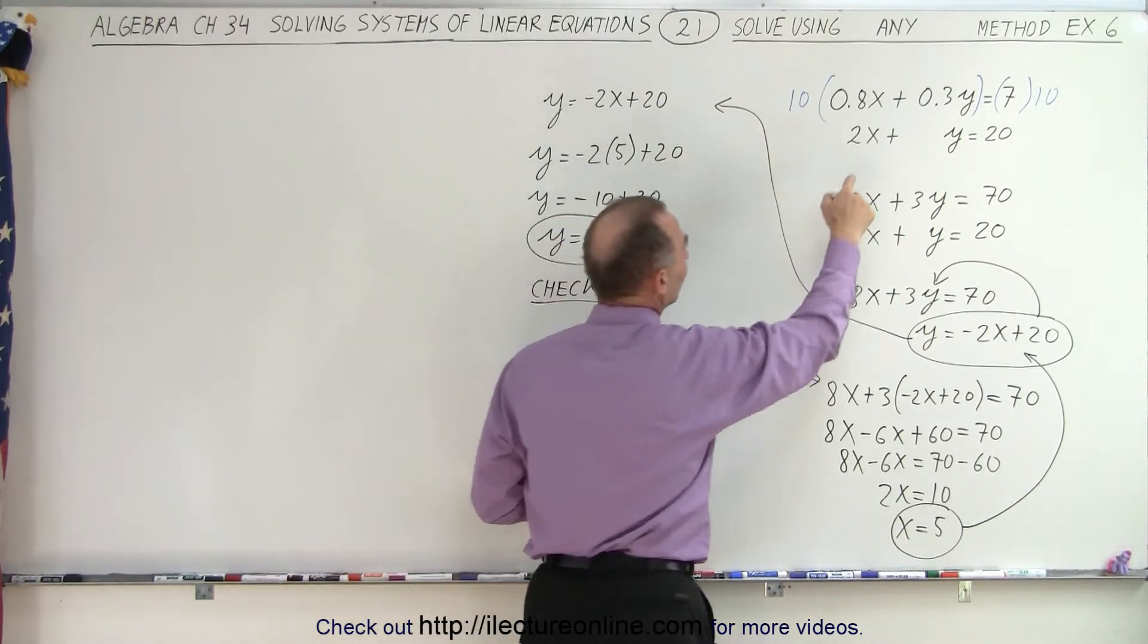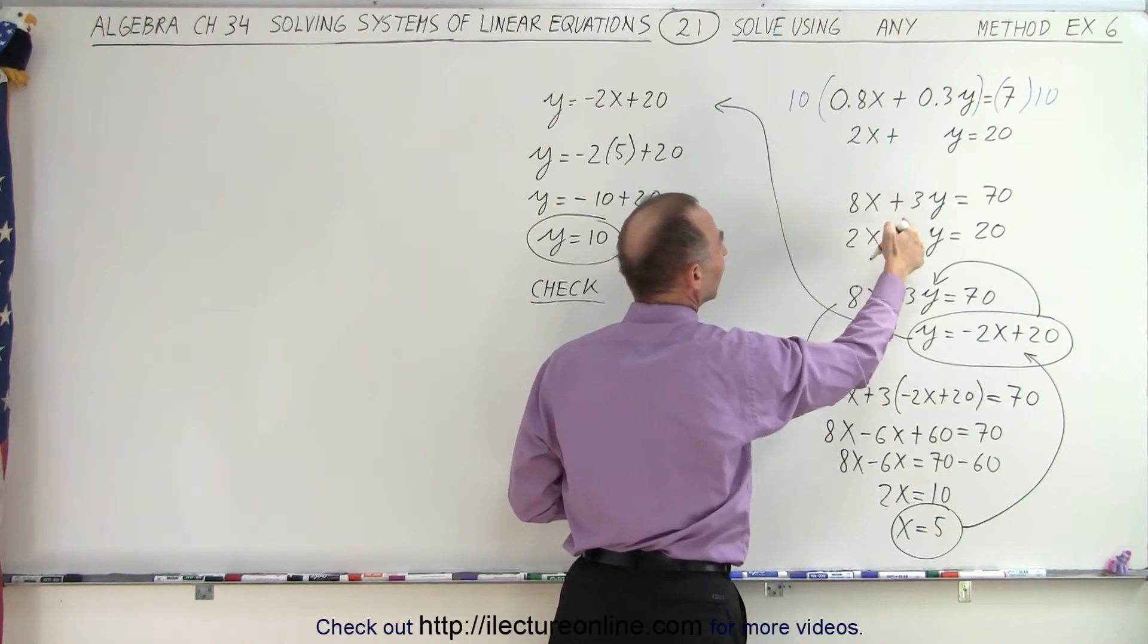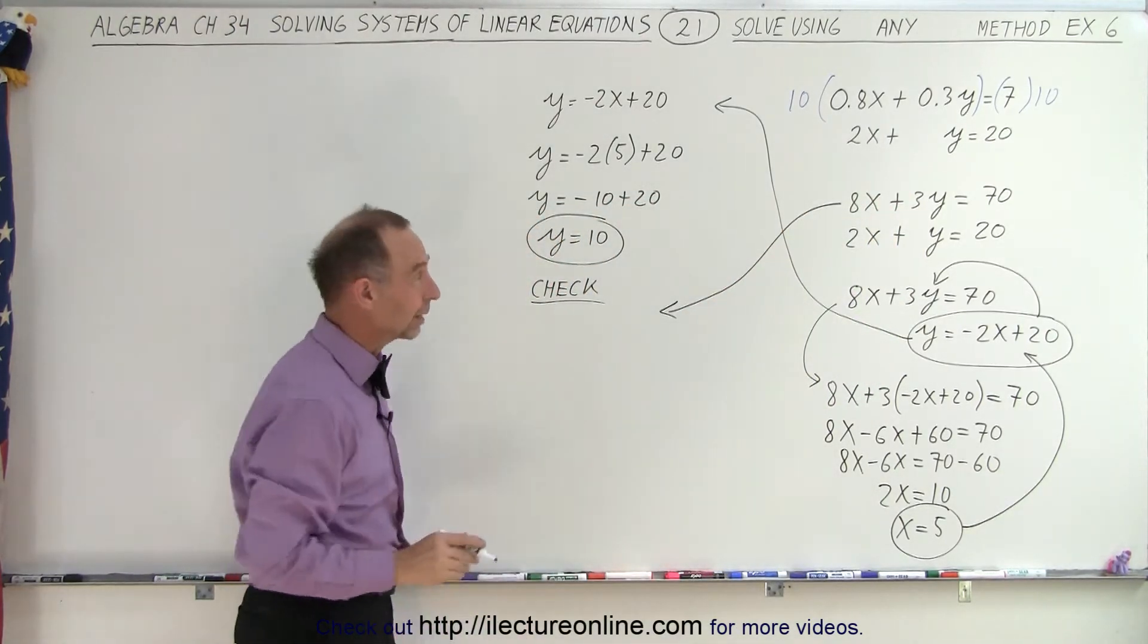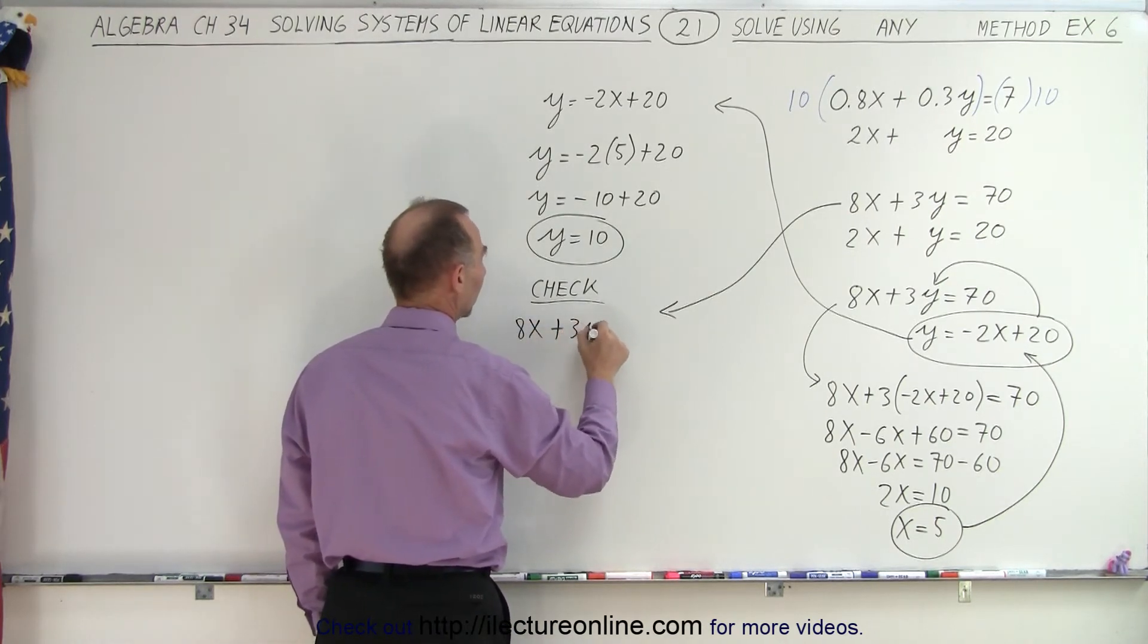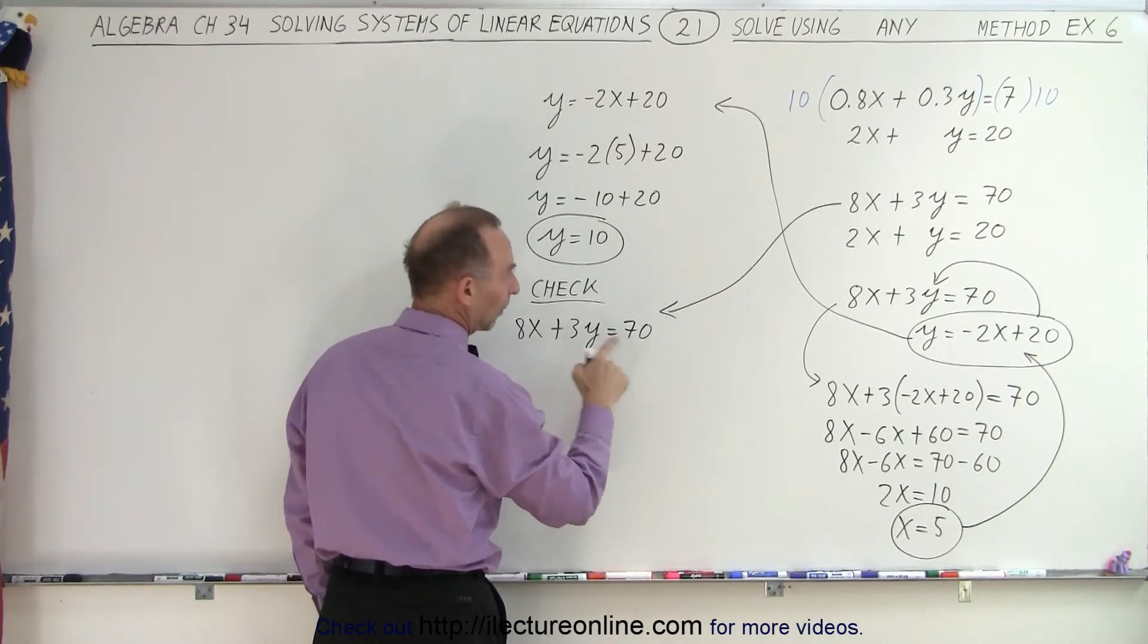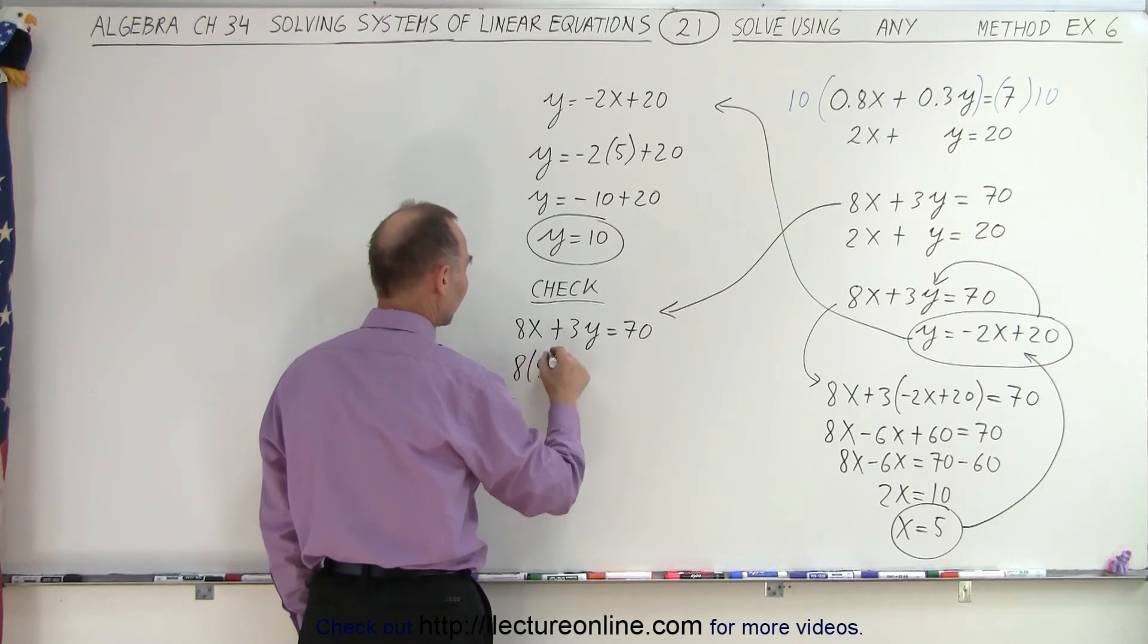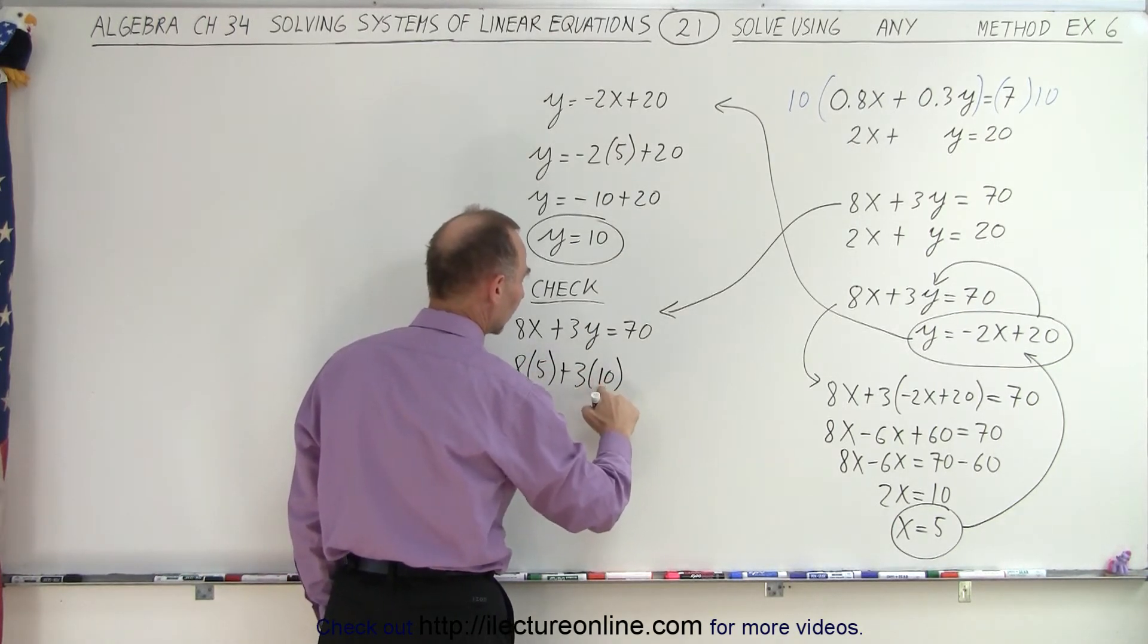Now instead of using the equation with decimals, let's go ahead and use the equation where I multiply everything by 10. So I'm going to use this equation to see if I did everything correctly. So we have 8x plus 3y is equal to 70. And now I plug in for x and y. I plug in 5 for x and 10 for y. So 8 times 5 plus 3 times 10.